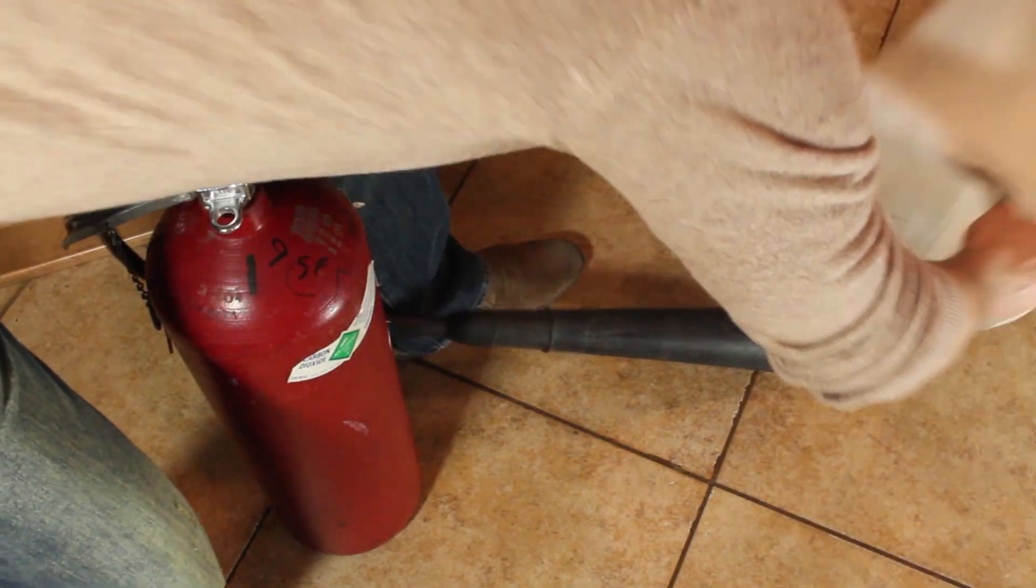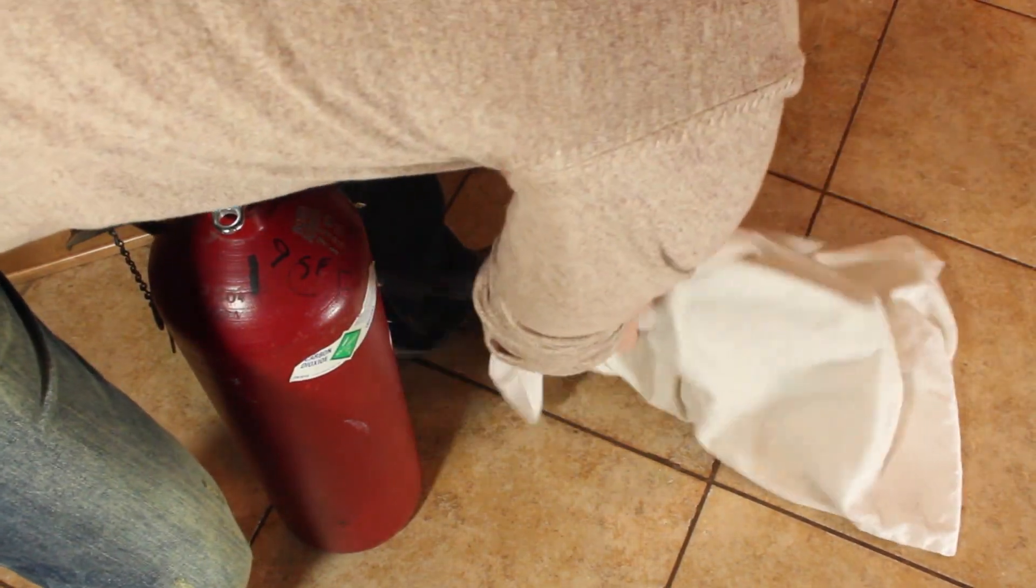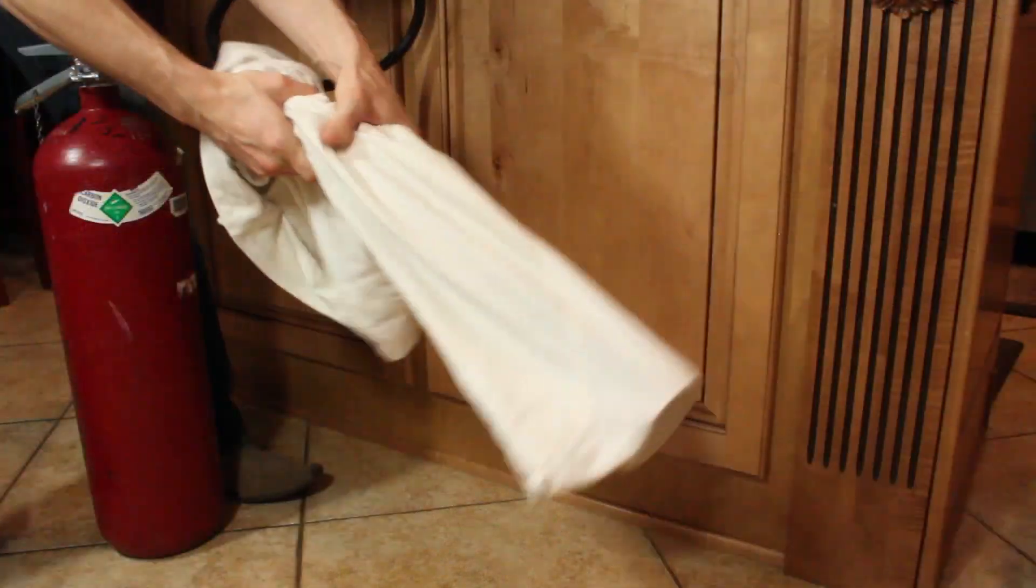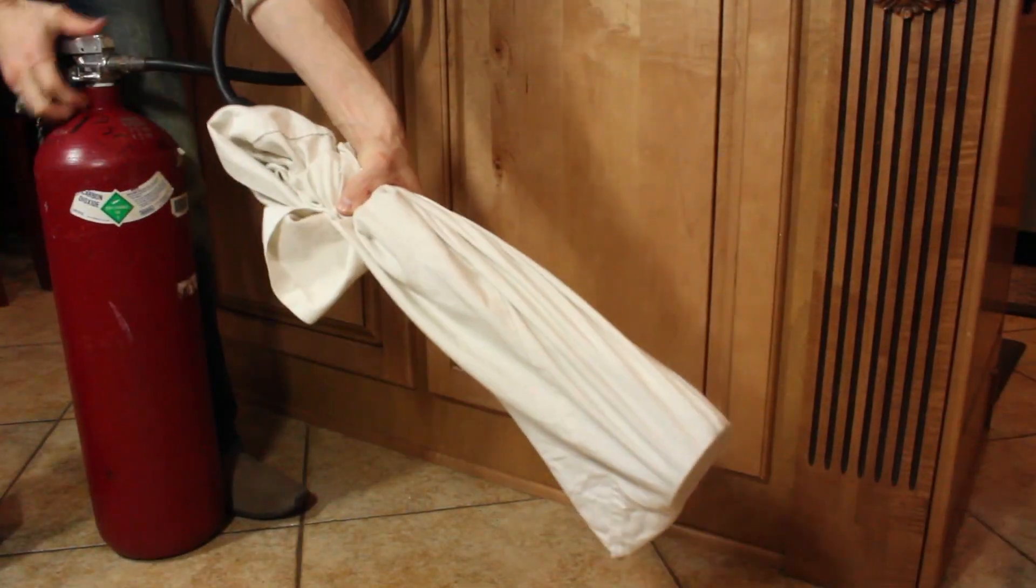Ok, now here's the trick to making dry ice. Take a cloth bag like a pillowcase and wrap it over the end of the discharge horn. Pulling up all the loose material, then go ahead and give it a blast.